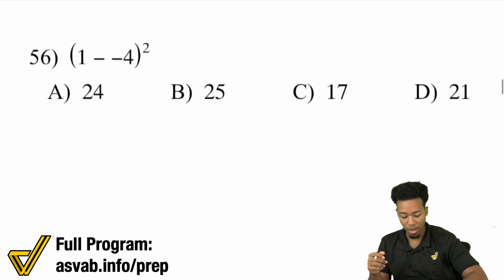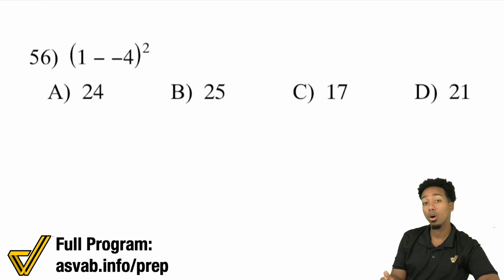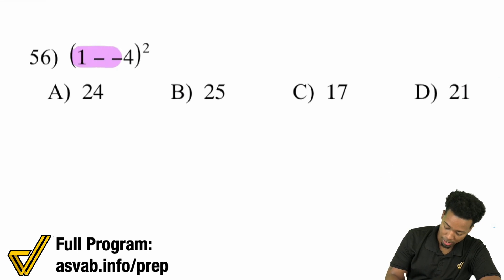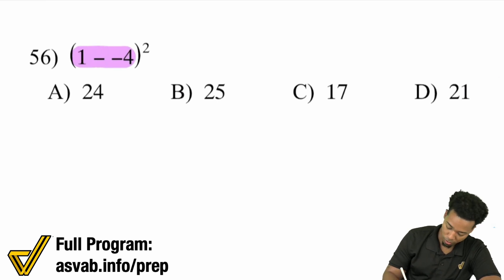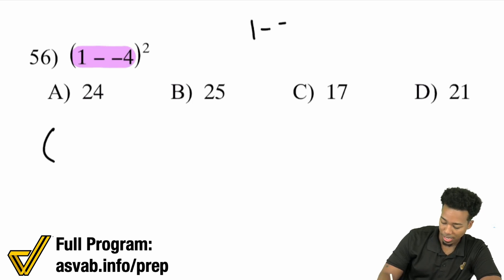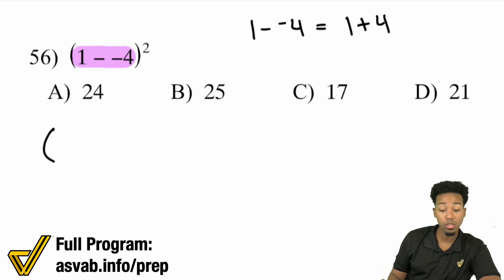Number 56: we have (1 minus negative 4) all squared. We're going to first take care of the group here — 1 minus negative 4. Remember that 1 minus a negative 4 — minus a negative — that's the same thing as adding. So that's really the same thing as 1 plus 4.